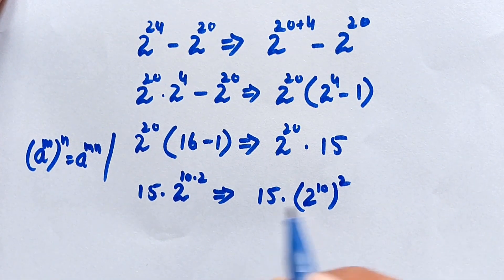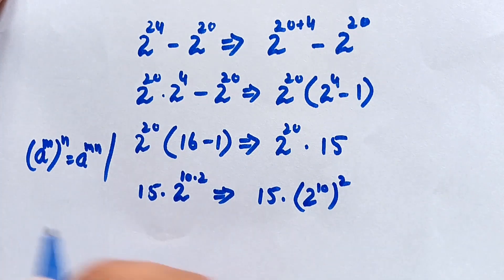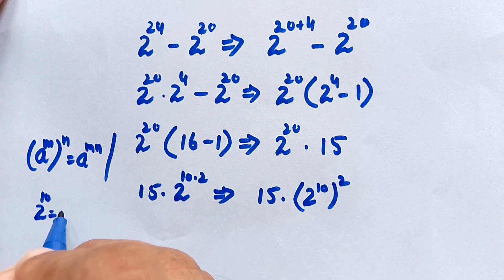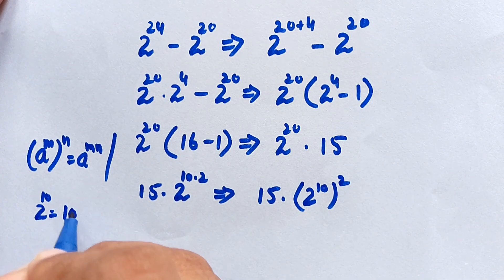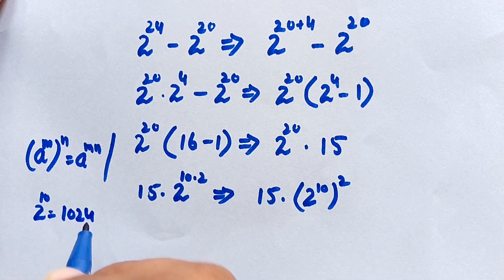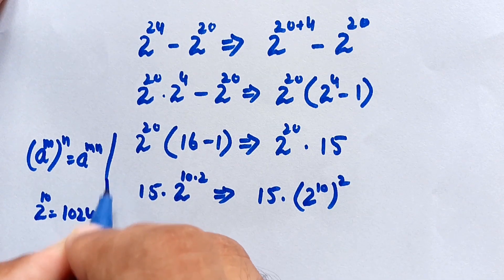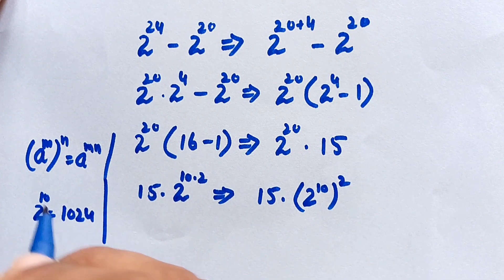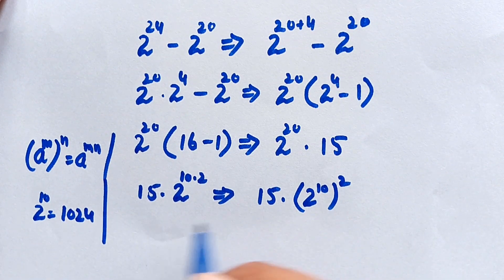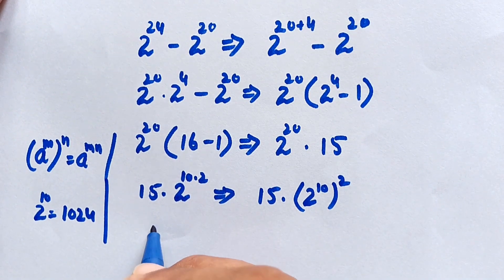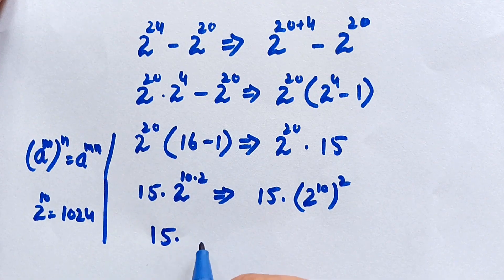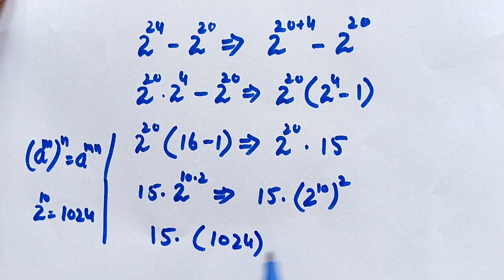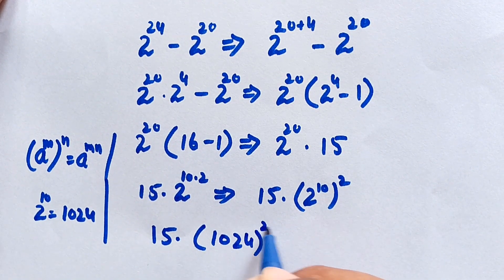We know that 2 to the power of 10 is equal to the very interesting number 1024. So we put 1024 in place of 2 to the power of 10. This becomes 15 times 1024 whole squared.